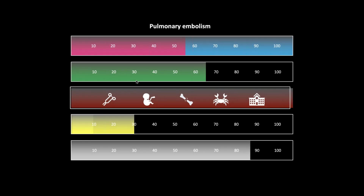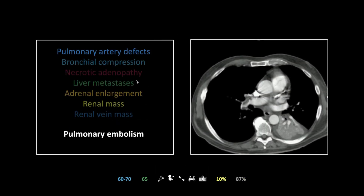CT is about 87% sensitive for pulmonary embolism. I'm going to comment on CT sensitivity because sometimes the stats don't necessarily agree with my personal experience — I'll call that out when that's the case. For PE, I think this number is probably accurate.